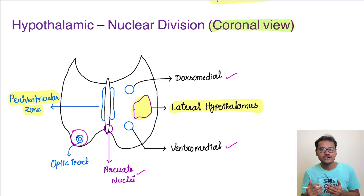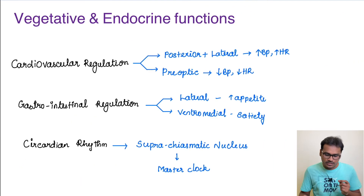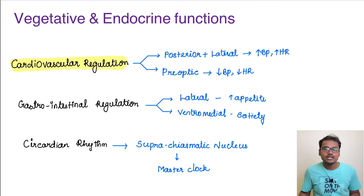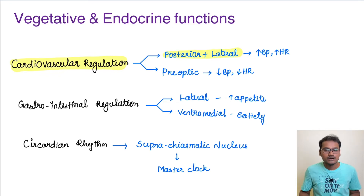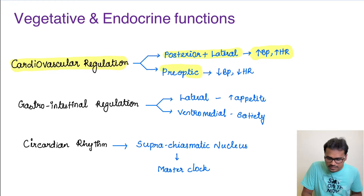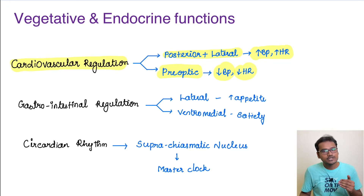Now coming to the most important functions, we will revisit these nuclei as we discuss each function. Under vegetative and endocrine functions, cardiovascular regulation is primarily handled by the posterior and lateral groups, which increase blood pressure and heart rate. The pre-optic nucleus, in the anterior group, does the opposite — it decreases blood pressure and heart rate.